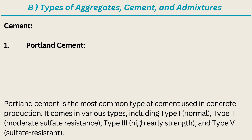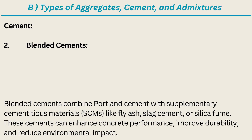Cement. Item 1: Portland Cement. Portland cement is the most common type of cement used in concrete production. It comes in various types, including Type I (normal), Type II (moderate sulfate resistance), Type III (high early strength), and Type V (sulfate resistant). Item 2: Blended Cements. Blended cements combine Portland cement with supplementary cementitious materials (SCMs) like fly ash, slag cement, or silica fume. These cements can enhance concrete performance, improve durability, and reduce environmental impact.